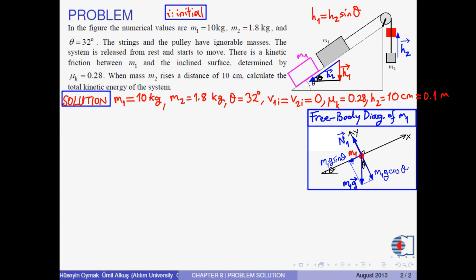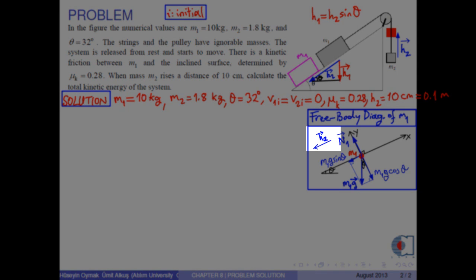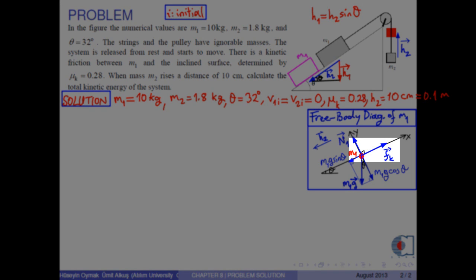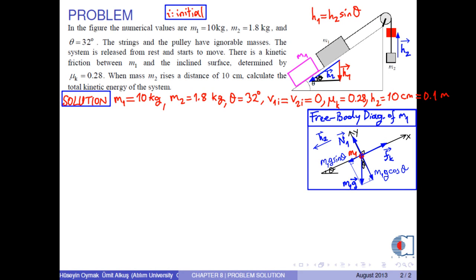Mass m1 goes down along the inclined surface. Therefore, the kinetic frictional force acting on the body is drawn upward along the inclined surface. As the final step to draw the free body diagram of mass m1, we draw the acceleration vector like this.